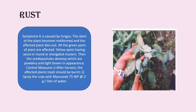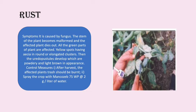Rust is a disease caused by a fungus. The affected plant's stem becomes stunted and dies, with all green parts affected. Yellow spots bearing uredinia in round or elongated clusters develop, and urediniospores appear which are powdery and light brown. Control measures include burning infected plant trash after harvest, and spraying the crop with Mancozeb 75 WP at 2 grams per liter of water.